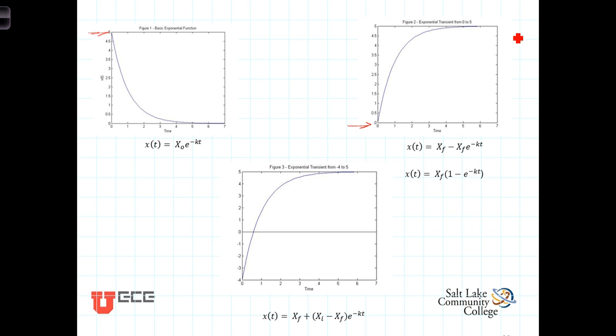And the function of time that describes that transition from its initial value to its final value is, well, starting at zero and going to its final value, is x of t is equal to x of f minus x of f e to the minus kt.